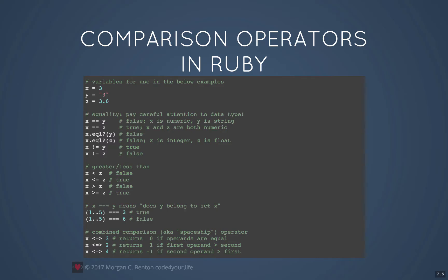Greater than and less than do what you would expect. The triple equals operator in Ruby does something different — it essentially asks the question: does the right-hand operand belong to the set represented by the left-hand operand? So if you've got the set of integers from 1 to 5, then 3 is a member of that set and would result in a true result. 6 is not a member of that set, so 1..5 equals equals equals 6 should give you false.